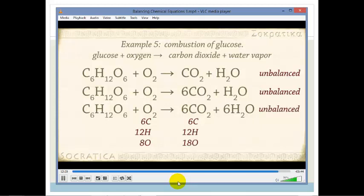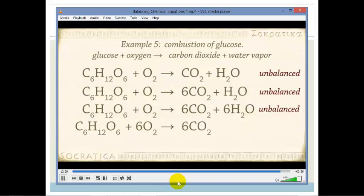Let's put a 6 in front of the O2 and recount. C6H12O6 plus 6O2 yields 6CO2 plus 6H2O. So on the left there's 6C, 12H and 18O. On the right there's 6C, 12H and 18O. Balanced.